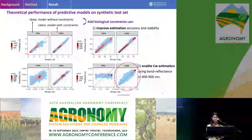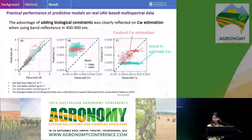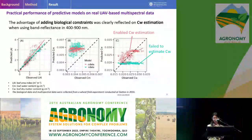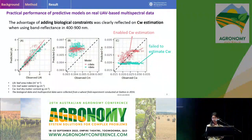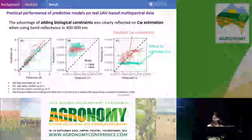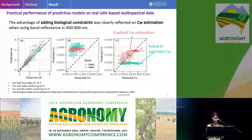However, there is actually no effective spectral information to extract leaf water content in this visible-to-near-infrared range. Here is the practical performance on real field data. It is quite hard to reproduce accurate predictions on the theoretical data scale when testing the model on real data. But we can still see the advantage of adding biological constraints — the model without constraints fails to estimate leaf water content, while the model with constraints enables leaf water content to be estimated.